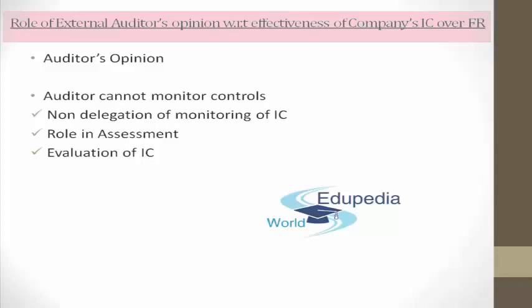Let's move towards the next topic: the role of external auditors with respect to their opinion on the effectiveness of the company's IC over FR. Number one: the opinion. As per the Securities Exchange Commission rules, each annual report should include an attestation by the company's external auditor — that means the statutory auditor — in which the audit firm expresses an opinion, or states that an opinion cannot be expressed, about the management's assessment of the effectiveness of the company's internal control over financial reporting in accordance with the standards and engagement attestations.